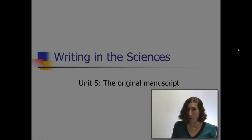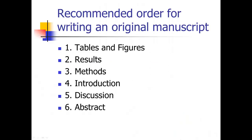We'll continue to talk about the writing process as we go through the course. But today I want to focus on the format of an original manuscript. I'm going to talk about it in the order I actually write one. I think it's best to start with the tables and figures first — and I don't just mean putting together rough data; I mean nailing your tables and figures. Your tables and figures are actually the story of your paper. Each table and figure should tell a story, and together they should progress to tell the entire story of the manuscript.